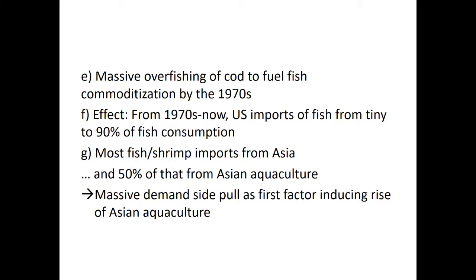Of course, changing consumption habits also changed our fish stocks. From the 1970s onwards, cod was overfished across all these areas. It reached the point where the United States now imports 90% of its fish and seafood needs, mainly from Asia, and 50% of what it gets from Asia is from aquaculture — a practice invented by the Chinese four or five thousand years ago.